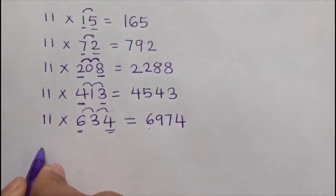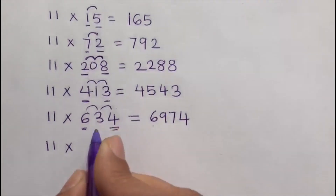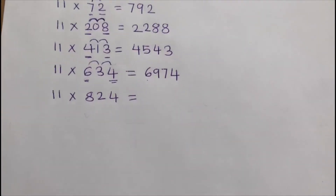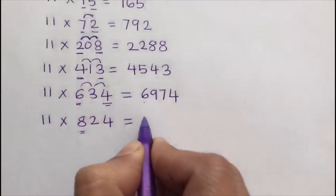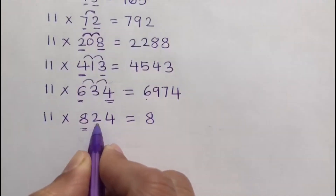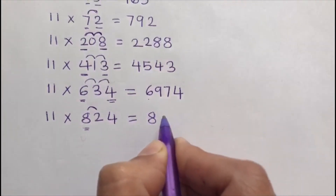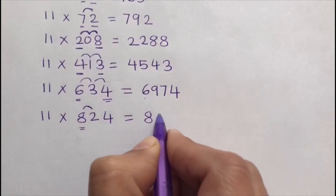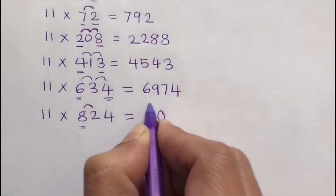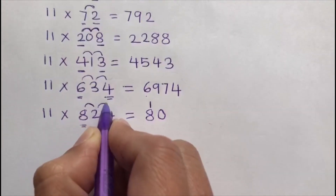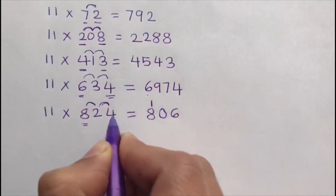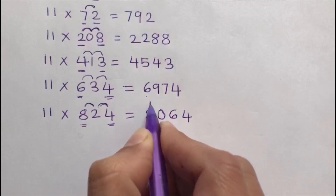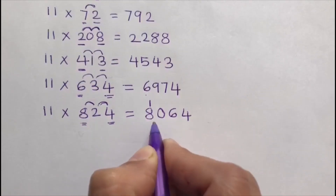Next: 11 times 824. The first digit is 8, so I write 8 here. Then I add 8 and 2, which gives 10. Since 10 is a two-digit number, I write 0 here and carry 1. Then I add 2 and 4, which gives 6. The last digit is 4.